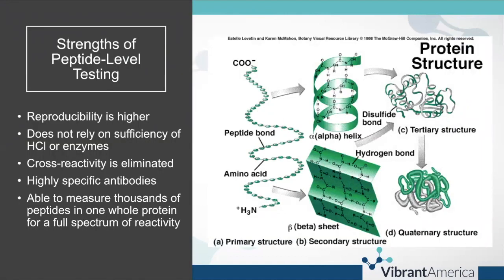At the peptide level, reproducibility on this test is higher. Vibrant has made reproducibility reports: they take one sample, run it over the course of multiple days and multiple times per day, and it is essentially exactly the same every single time. Peptide level testing also doesn't rely on the sufficiency of hydrochloric acid or enzymes — that's taken out of the picture. Cross-reactivity is eliminated because peptides within each protein are not going to have molecular mimicry to unrelated proteins. The antibodies are highly specific to the peptides, and we're able to measure thousands of peptides in one whole protein for a full spectrum of reactivity.